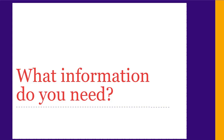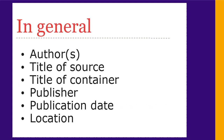Next, we'll look at what information you need to create a citation. Each citation style requires specific pieces of information about each of your sources. These include the author, the title, the title of the item that the source is located in, the publisher, date, and the information you need to locate a copy of the source.